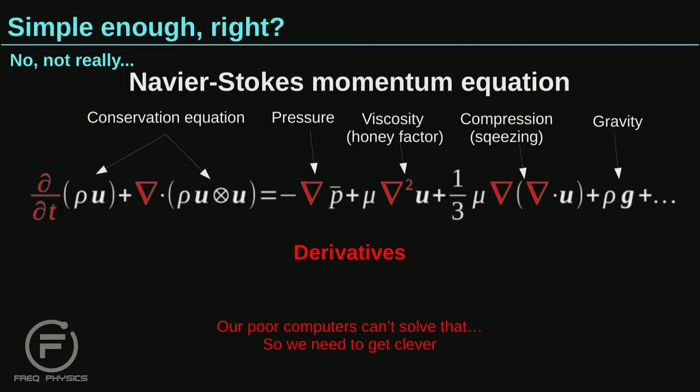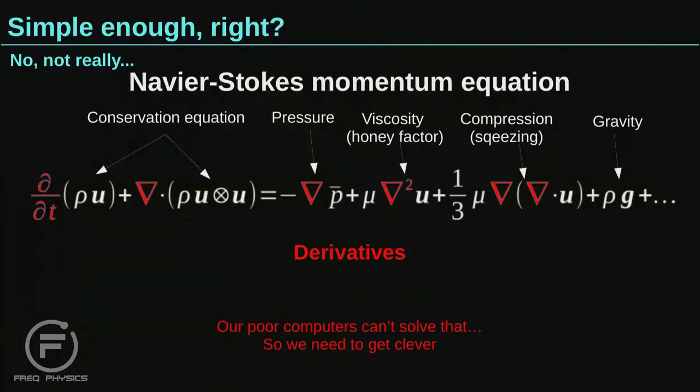These rules seem simple, but actually they aren't. This is the Navier-Stokes equation — a very complicated equation that is not completely solved. All the red terms are derivatives. We have our conservation law as the nice, simple part, but we also have to account for pressure, viscosity, compression, how sticky the fluid is, and gravity. All of these additional physics terms depend on changes in position or time. Computers don't understand the nabla symbol, so we need to find an algorithm that the computer can handle.